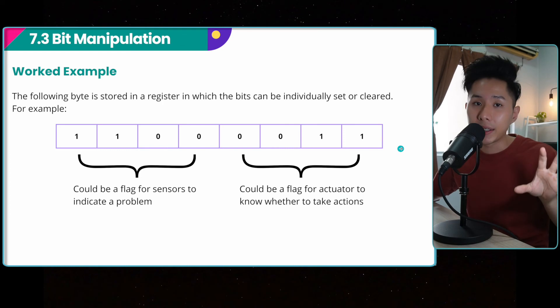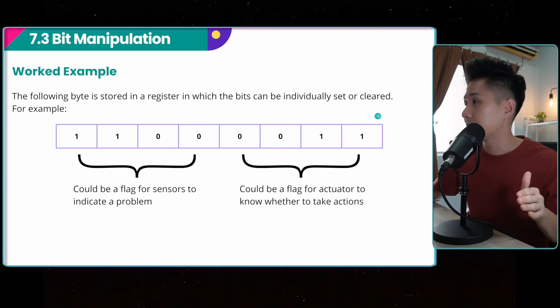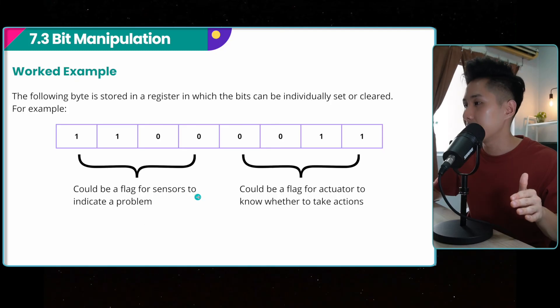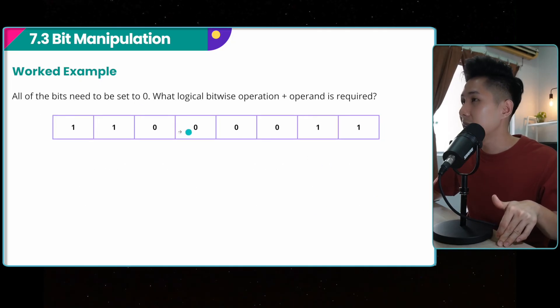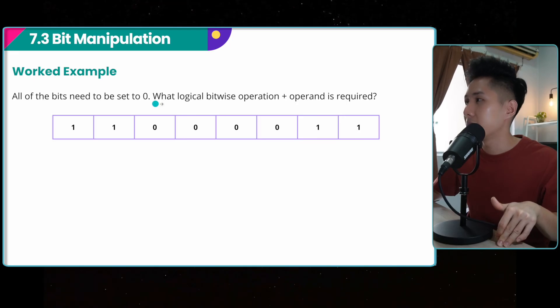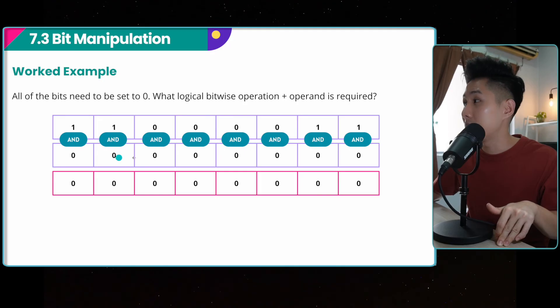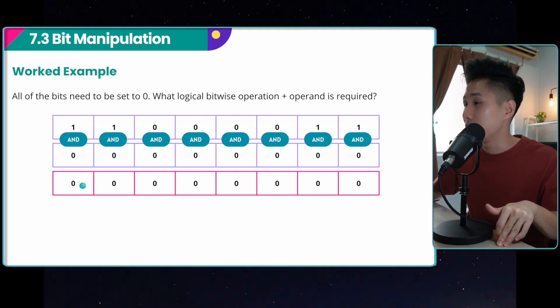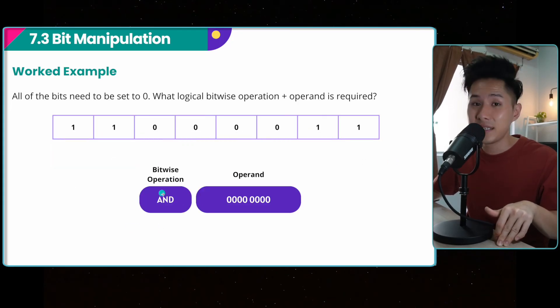So let's look into some worked examples, some of the exam questions that will be required to solve. They're going to show you a byte and then ask you what operator should you use to achieve the desired result. In this case, I have a register that has eight bits. So the first four bits can be a flag for sensors to indicate a problem. And the next four bits could be a flag for actuators to know whether to take action. So the first question, all of the bits need to be set to zero. What logical bitwise operation and what operand is required? As we learned just now to set every bit to zero, you just use an AND operator and then put the operand as all zero. So the bitwise operation selected is AND and the operand is zero.